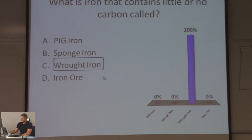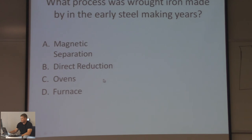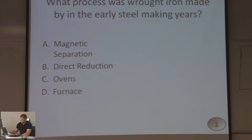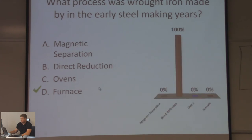What process was wrought iron made by in early steel making years? Magnetic separation, direct reduction, ovens, or furnace? Direct reduction, right? They would just beat it with a hammer — heat it up, beat it, heat it up, beat it.